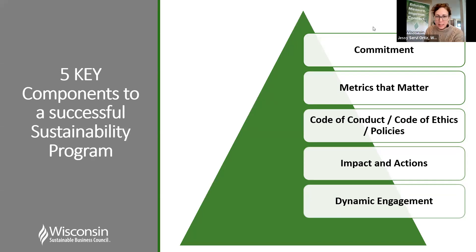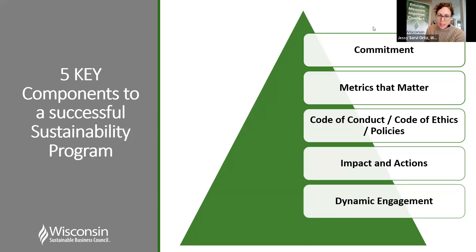The fourth is impact and actions — this is where the rubber meets the road. You need to align your actions with what's impactful for the organization and continue to strive to make changes in those areas. The fifth is dynamic engagement, often the hardest component. This is where you get to change the culture of the organization so that it's everybody's job to care about sustainability, to have some level of authority or direction over it.